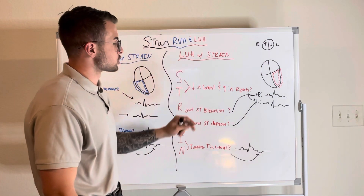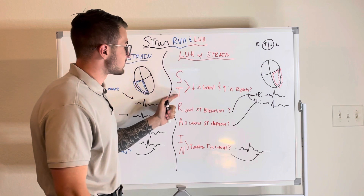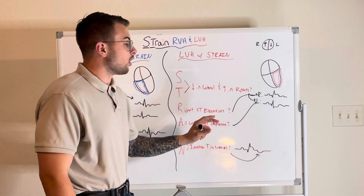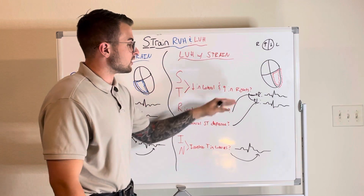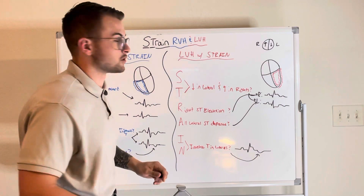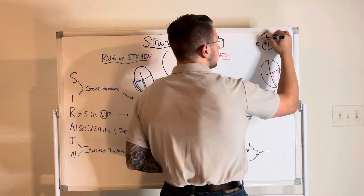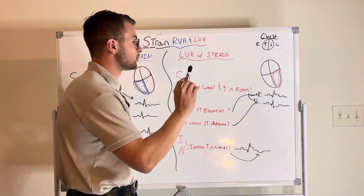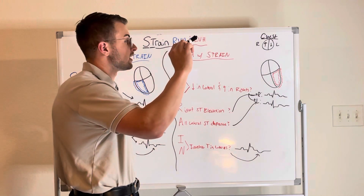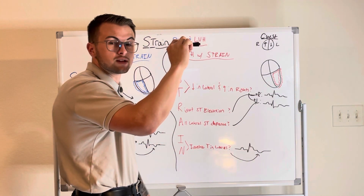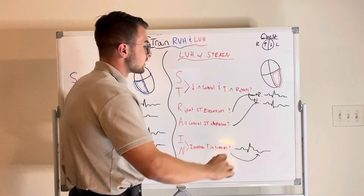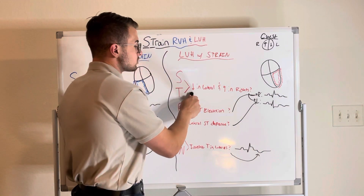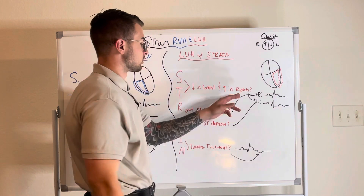For LVH with strain, what we need to memorize is that the STs will be down in the lateral precordial leads and they will be elevated in the right precordial leads. We're only talking about the chest leads — the precordial leads only. ST elevated in the right precordial leads V1 through V3 (sometimes V4), and ST depressed in the lateral leads V5 and V6.